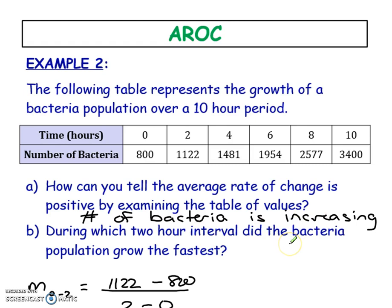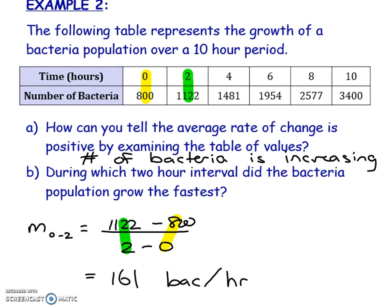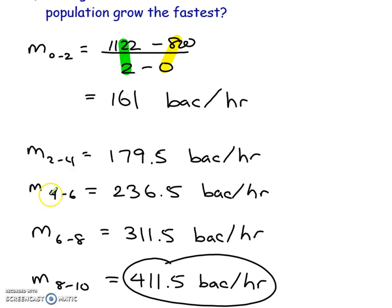During which two-hour interval did the bacteria population grow the fastest? Now they're talking about rates, and is the rate the fastest from 0 to 2 hours, 2 to 4 hours, 4 to 6 hours, or so on. That's when you have to start calculating your slope. Let's say these two are our first point, and then our second point is these guys right here. We will calculate our slope between 0 and 2 hours. It looks like the growth rate is 161 bacteria per hour, but I'm going to calculate all the other rates from 2 to 4, 4 to 6, 6 to 8, and 8 to 10 hours. If I look at all the speeds, this one is the fastest. So it looks like the bacteria is growing pretty fast from 8 to 10 hours.